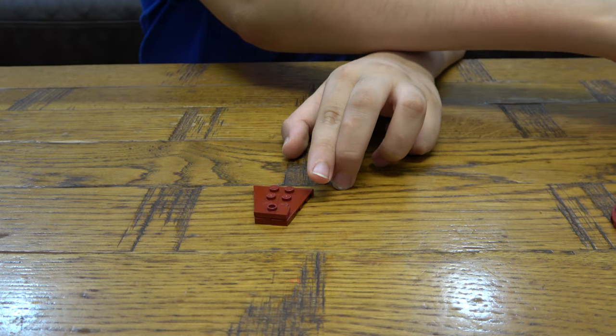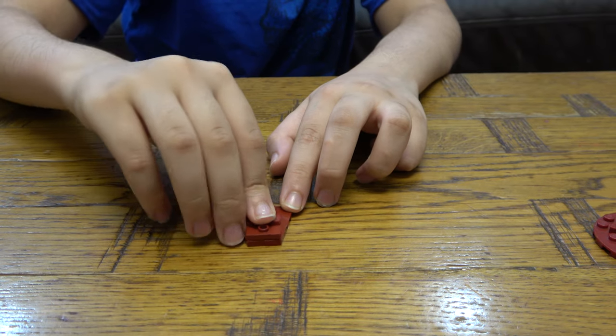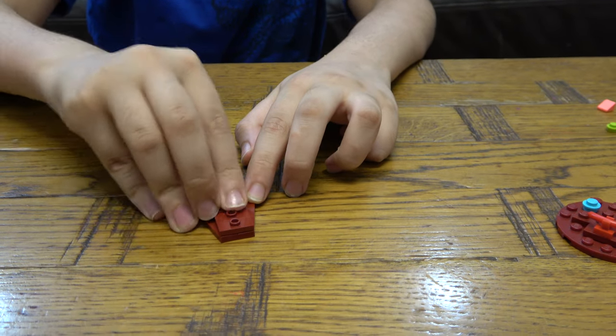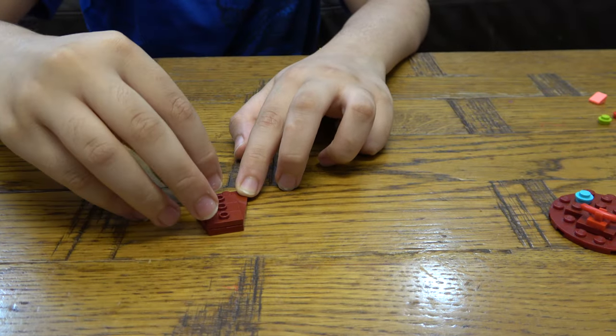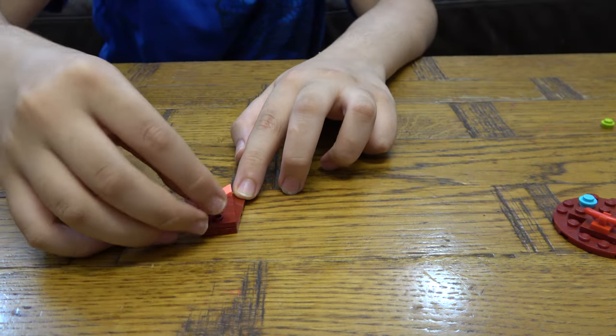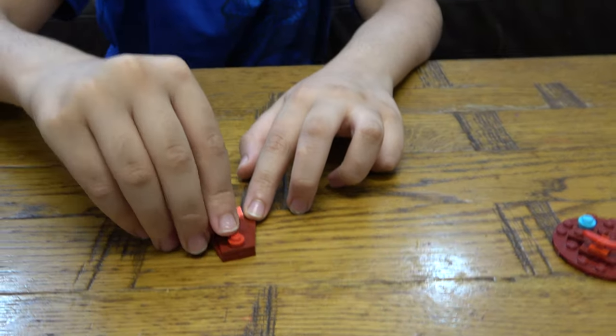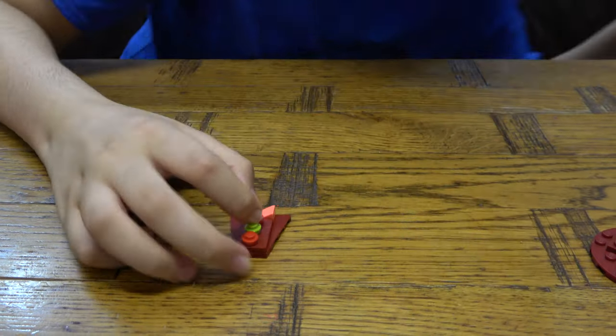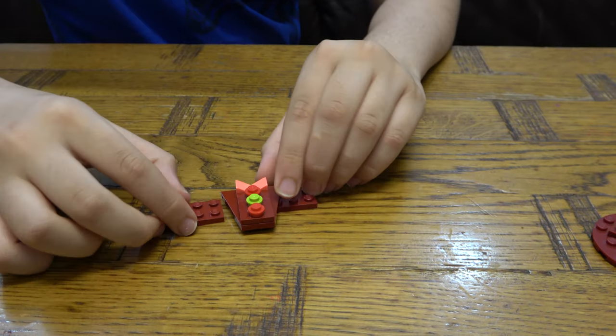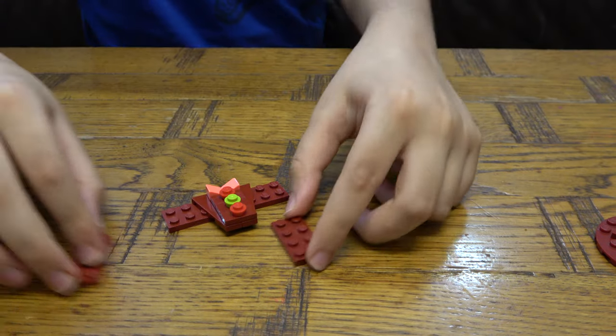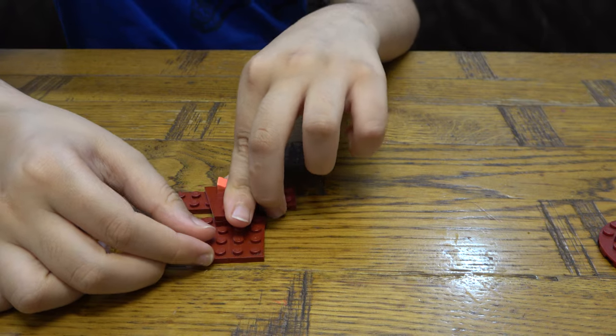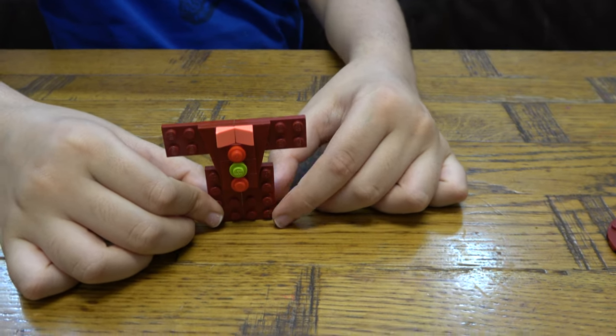Get three of them, and then two of these. And then next, the arms and legs, what we're going to do is just get these two. These two like so. Here we have the body.